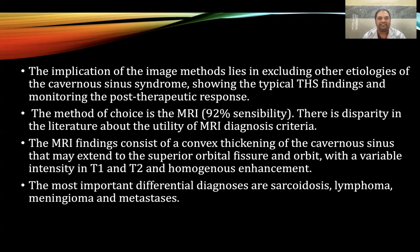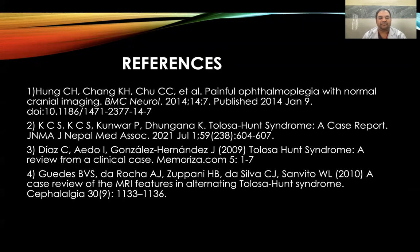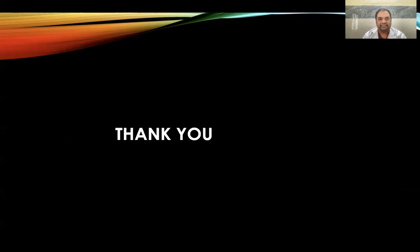There is disparity in the literature about the utility of MRI diagnostic criteria. The MRI finding consists of convex thickening of the cavernous sinus that may extend to the superior orbital fissure and orbit, with variable intensity on T1 and T2 and homogeneous enhancement. The most important differential diagnoses are sarcoidosis, lymphoma, meningioma, and metastasis. These are my references. Thank you.